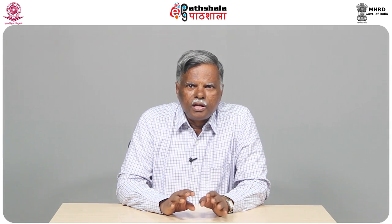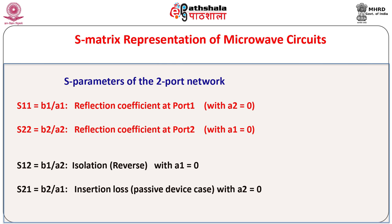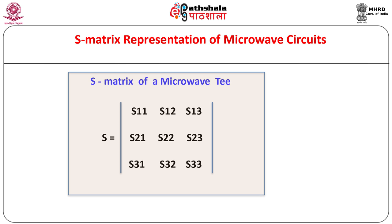So let us see something about S parameters. In the earlier module we have seen the way in which a two port network can be described in terms of S parameters — the related equations which can be written in matrix form are as shown. Have a look at the terminology, defining equations, the conditions and the significance of the S parameters of the two port network. In general every linear microwave circuit or device when represented as an equivalent N port network can be represented by what is known as an S matrix of order N containing N² elements. For example, a microwave T having three independent ports is characterized by an S matrix of third order — a 3×3 matrix consisting of 9 elements.